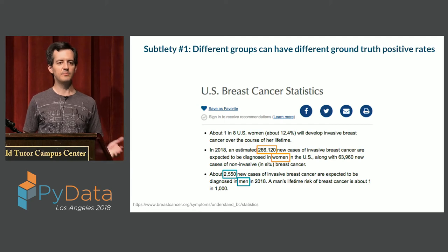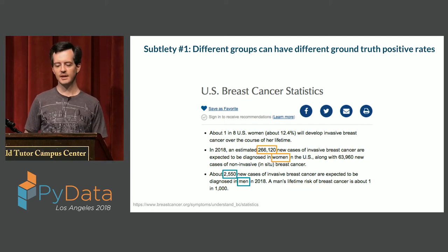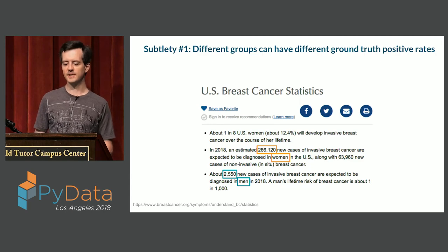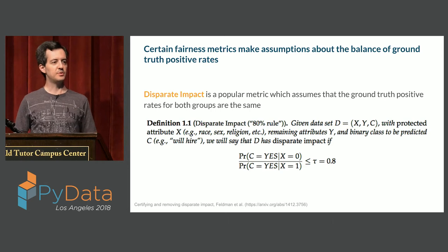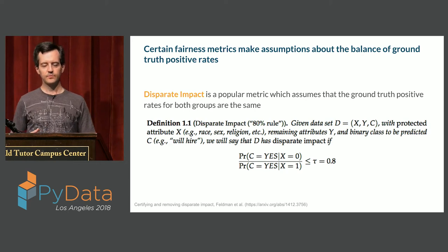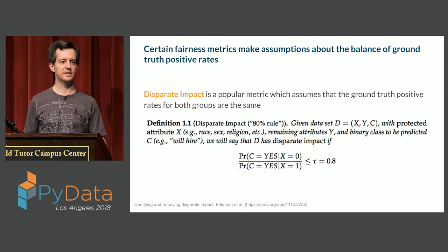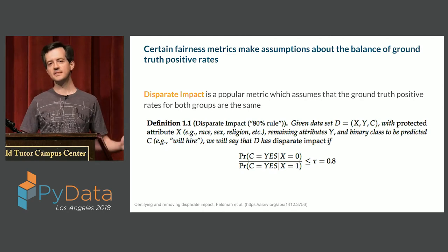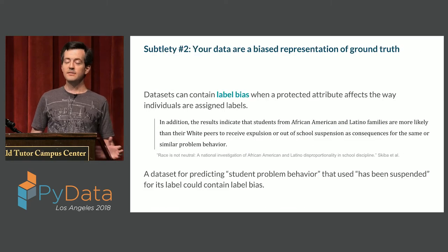The first thing to consider is that maybe reality just is not the same between your protected classes. For example, the rates of breast cancer are extremely different between men and women, and the rates of prostate cancer are extremely different between men and women. One metric people often use to measure fairness of models is called disparate impact — as far as I know, it's the only metric that actually shows up in United States case law, used to argue in a legal framework that algorithms are illegally biased. But disparate impact compares the rates of positive predictions for each protected class and asserts these rates should be the same. If you're making a classifier for something like breast cancer or prostate cancer and your classifier passes this test, I would argue it's doing a very bad job.